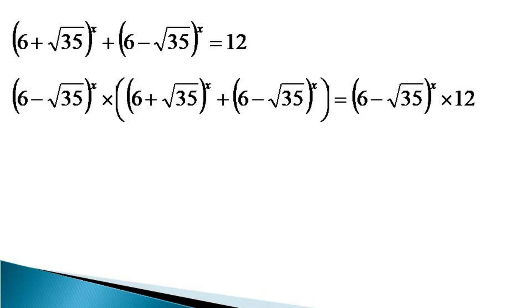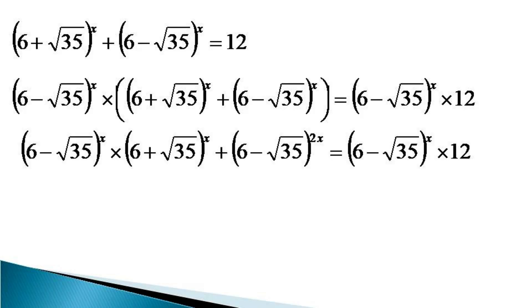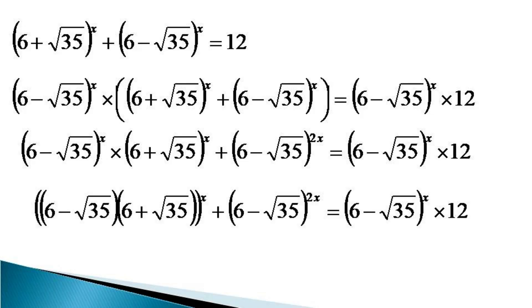In this equation, the multiplication results in (6 minus √35)^x times (6 plus √35)^x, plus (6 minus √35)^(2x), becoming equal to the right hand side. Since in the first term on the left hand side both the powers are equal, the bases can be multiplied together. So the equation becomes (6 minus √35) times (6 plus √35), whole raised to the power x, plus the rest of the terms.